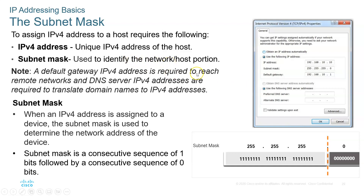The subnet mask identifies the network portion of the IP primarily. The default gateway means that all the hosts in the LAN must know who the default gateway is. If you're not trying to communicate with anyone in your LAN, by default you go to the gateway, which is your router. If you don't know the IP address of the default gateway, you will not be able to communicate with the outside world.